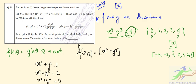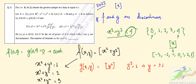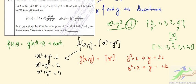For g(x,y), the floor function argument is y², so g is discontinuous when y² = 1, 2, or 3. This gives y = ±1, y = ±√2, and y = ±√3. We need the points where both f and g are simultaneously discontinuous, so we intersect the circles x² + y² = 1, 2, 3 with these y-values.